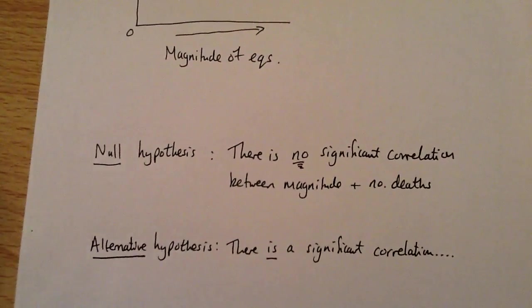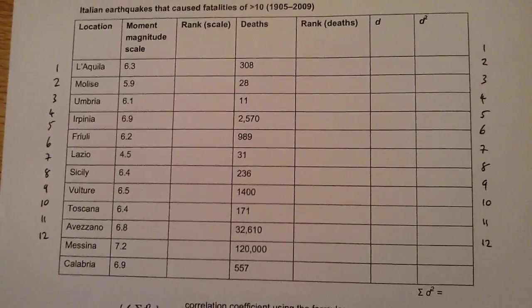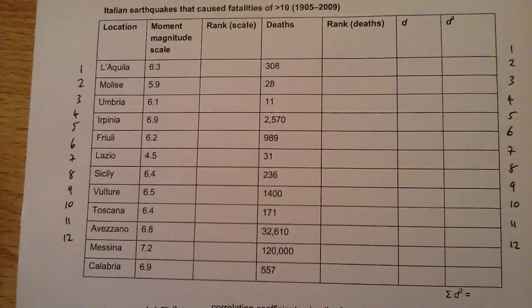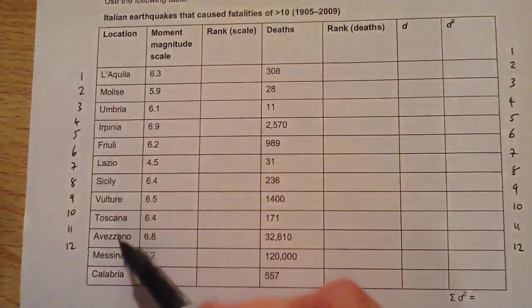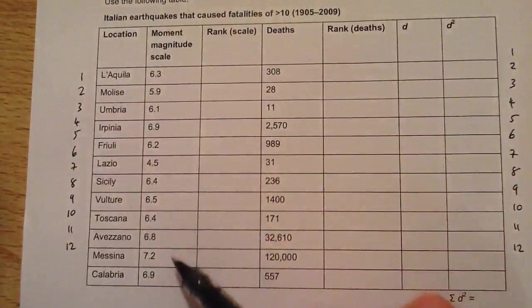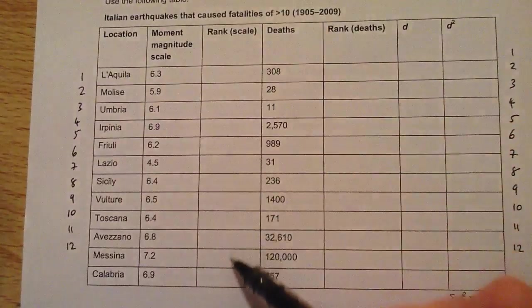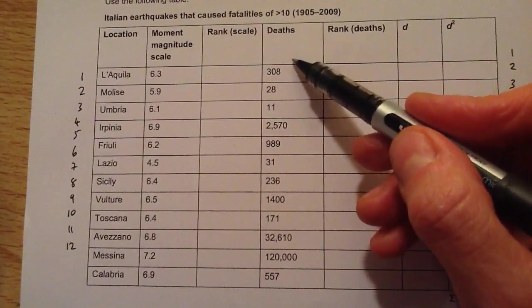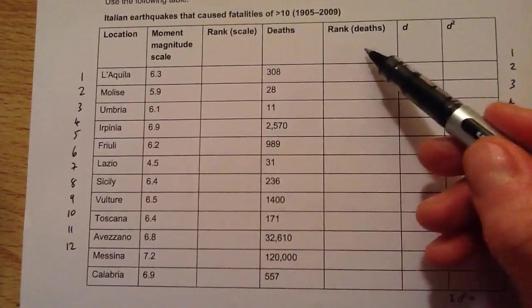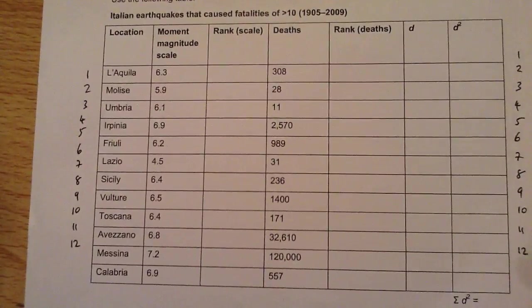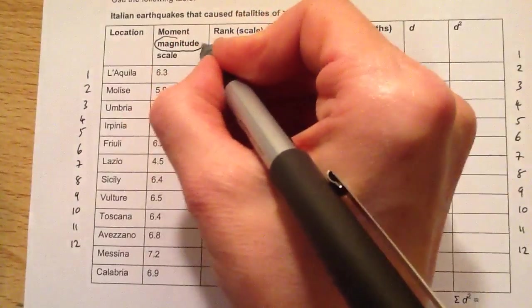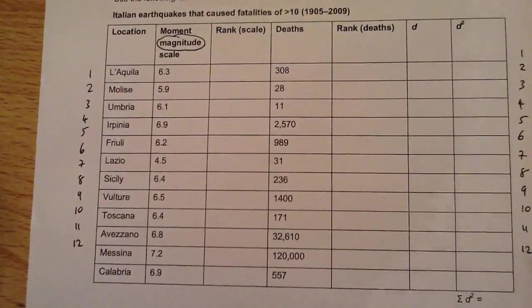The next thing you need to do is input your data into a Spearman's rank table. We've got some information here about some earthquakes in Italy. We've got the name of the location, the magnitude of those earthquakes, a ranking column which is empty at the moment, then the number of deaths corresponding, and another blank ranking column.